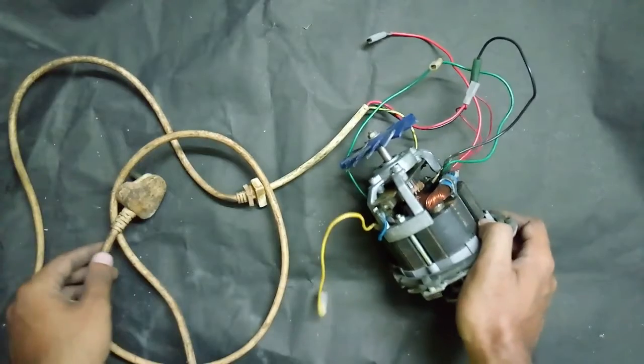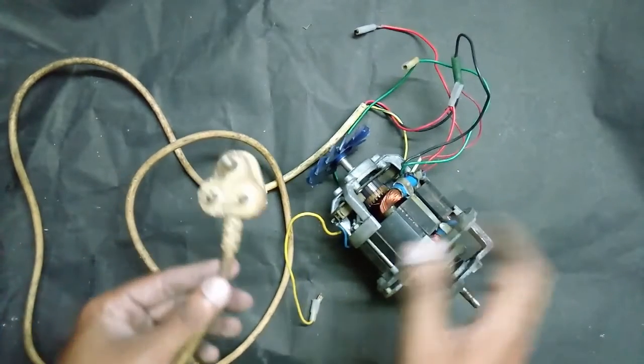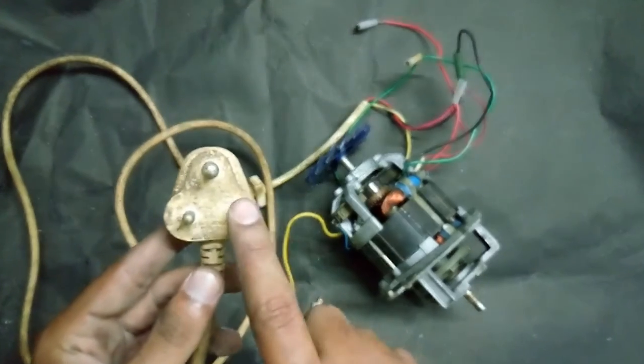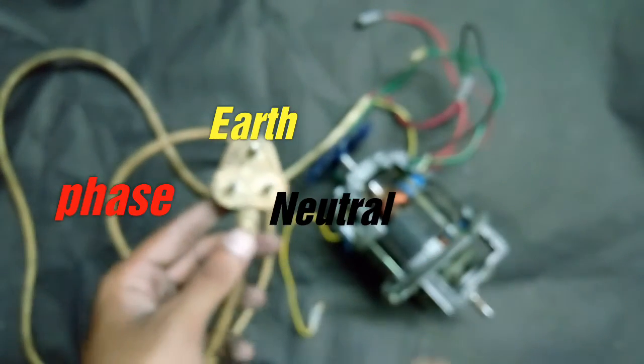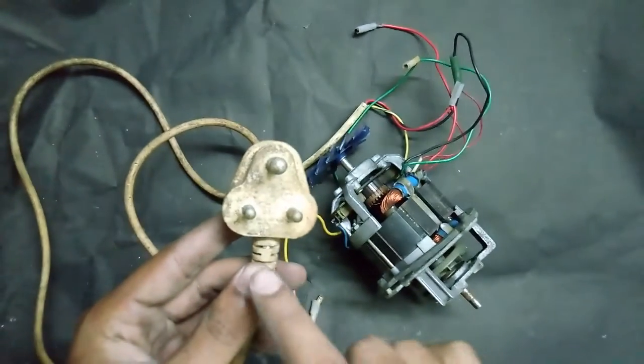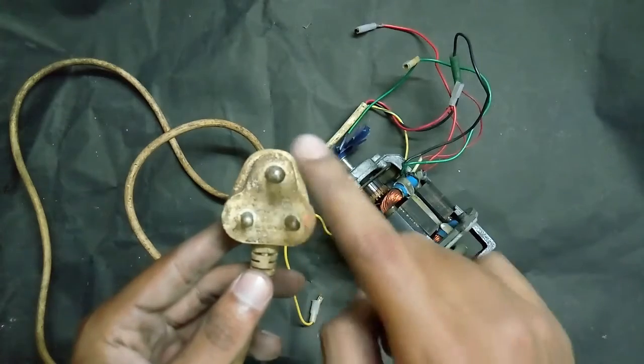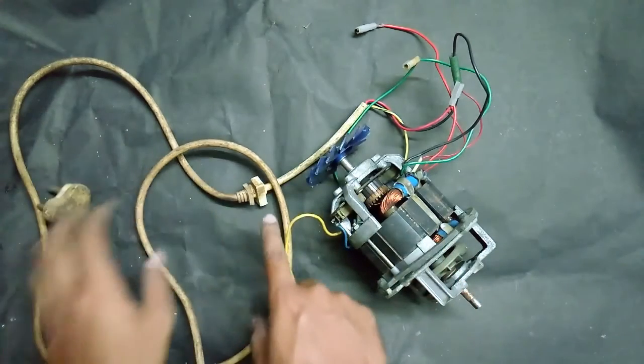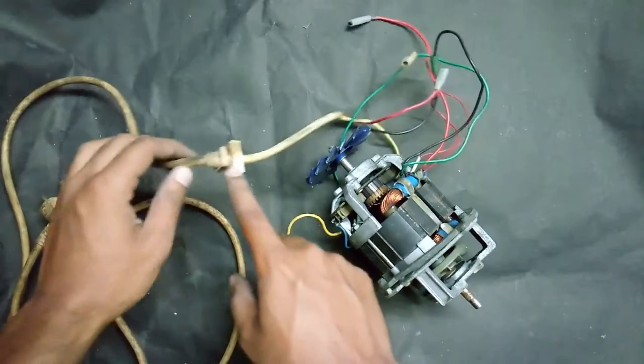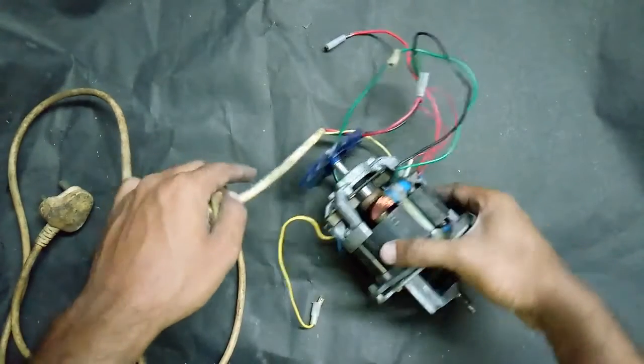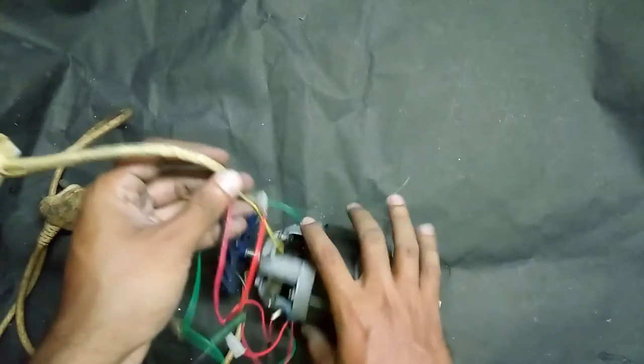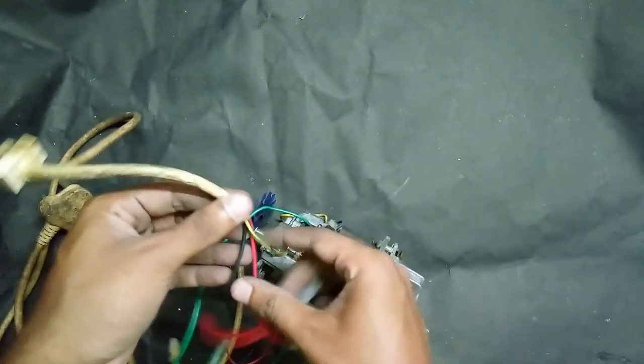So first of all I will start with the connecting wire. Here this is phase, neutral, and earth—three points. This is the starting of the wire and over here this is the ending part. You can see here there are three colored wires.